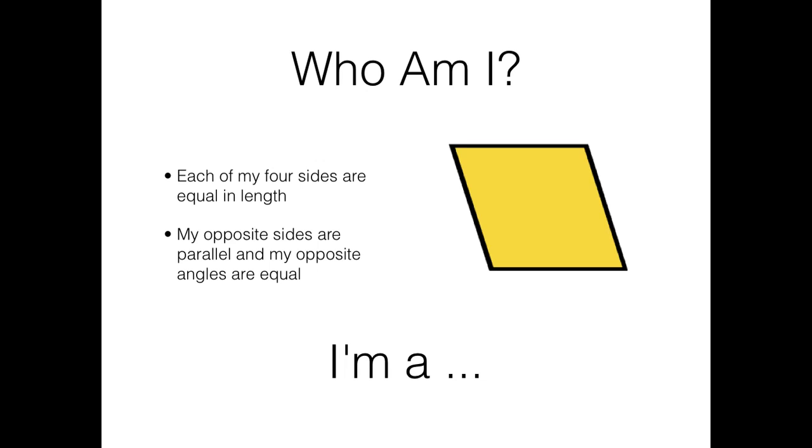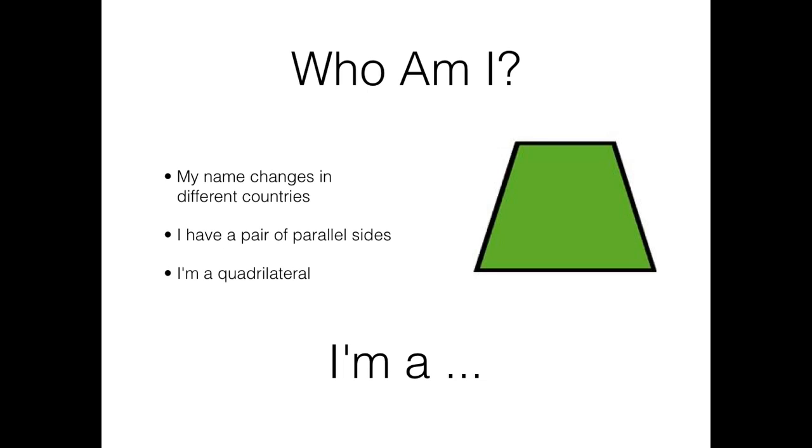Hey, who am I? Each of my four sides are equal in length. Side one, side two, side three, side four. All equal. Now, my opposite sides are parallel. Parallel lines never touch. And my opposite angles are equal. Angle, angle, equal. Angle, angle, equal. I'm a Rhombus.